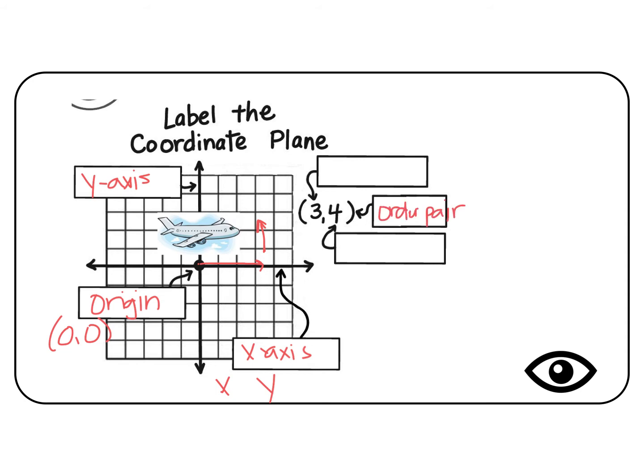An ordered pair is a set of two numbers that tell us where a point is located. In this example, 3, 4, the plane would go down the runway 1, 2, 3, and then up 1, 2, 3, 4. So it would be located right here.